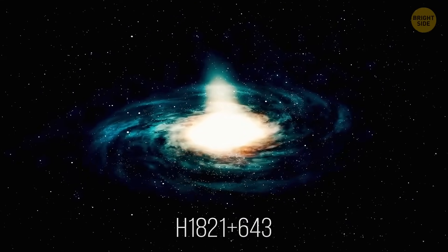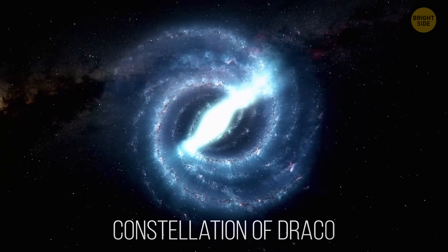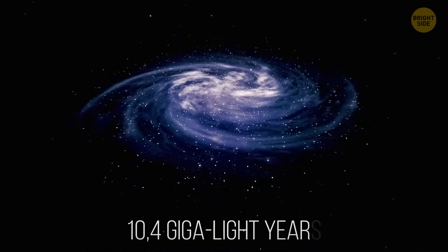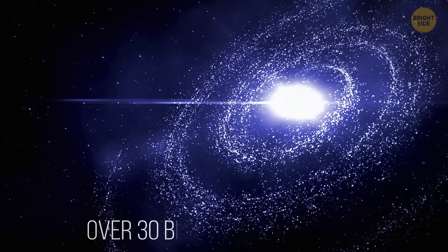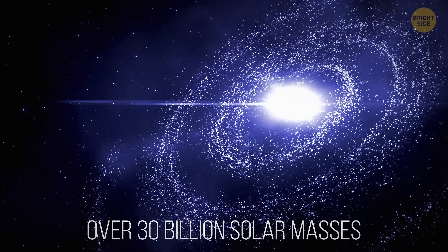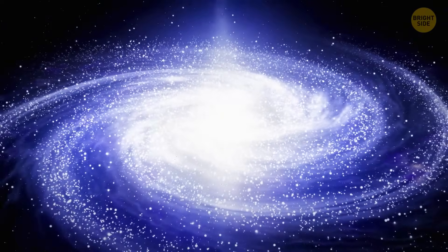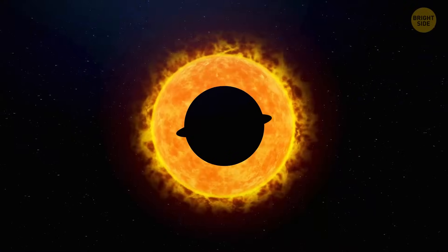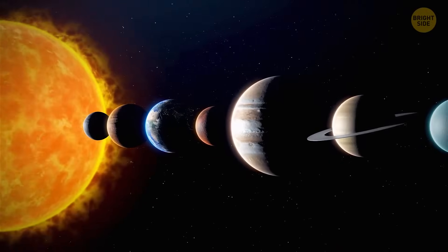The next supermassive black hole is located in the constellation of Draco, approximately 10.4 giga light-years from us. The mass of this supergiant is more than 30 billion solar masses. Besides being incredibly massive, the black hole is also really big. If it replaced our sun, the diameter of this hole would extend to the orbit of Pluto.